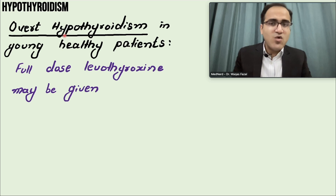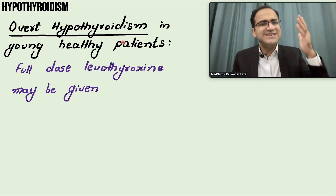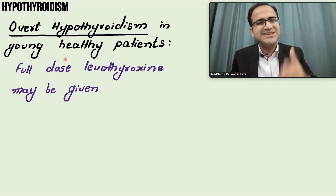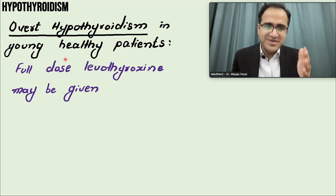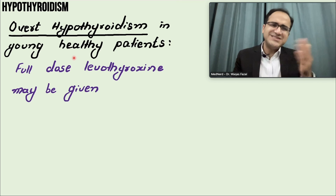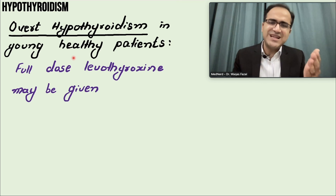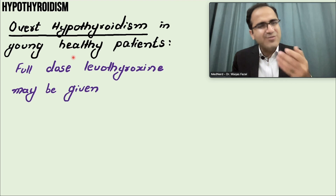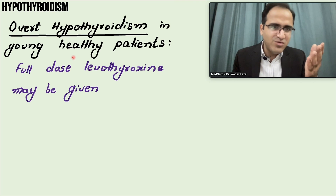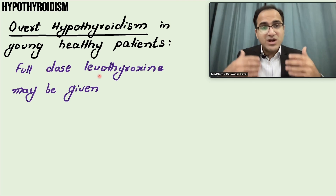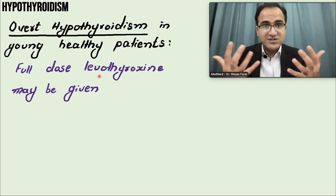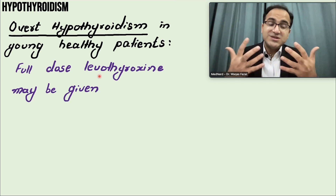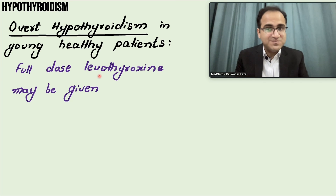If the patient has overt hypothyroidism with elevated TSH and low T4, and the patient is a young healthy male or female, you can give the full dose of levothyroxine for thyroid hormone replacement. After starting levothyroxine therapy, within about a week the patient reports improvement in symptoms.